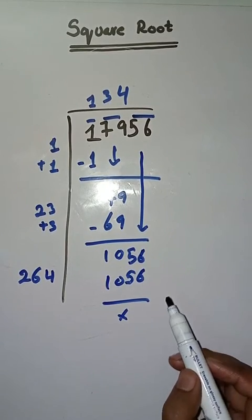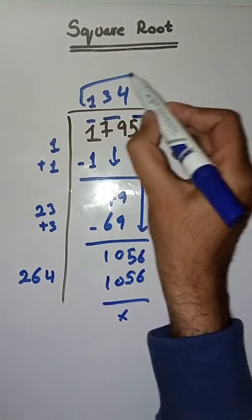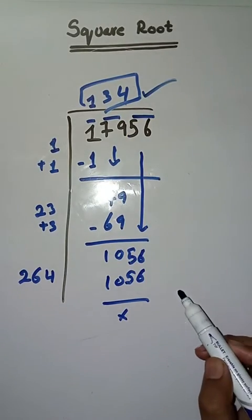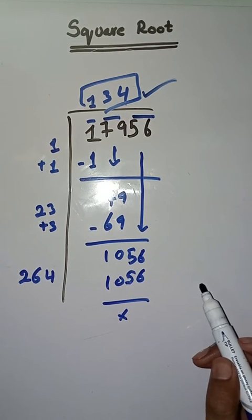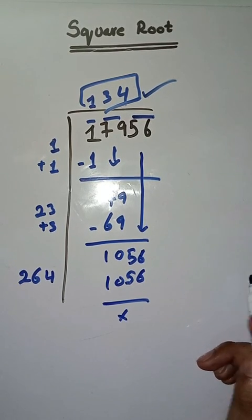So square root of 17956 is 134. Hopefully you like this video. If you really did, please like, share, and subscribe my YouTube channel. If you have any question, you can ask in comment section. Thank you.